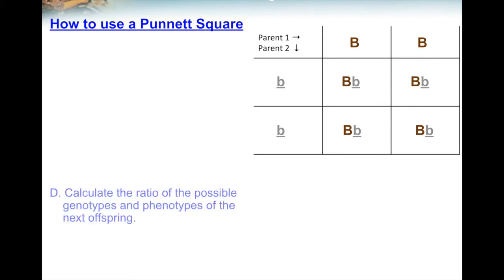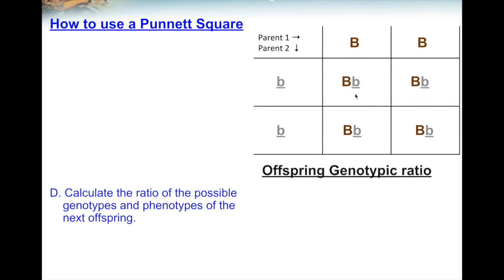The last thing is to calculate the ratio of possible genotypes and phenotypes of the next offspring. Looking inside the Punnett square, there's only one combination — they're all heterozygous genotypes with one capital and one lowercase. So heterozygous genotype equals four out of four boxes, or you can write it as 100% of the time. This means that when these two parents — a homozygous dominant and a homozygous recessive cat — mate, they're going to have a kitten with a heterozygous genotype.